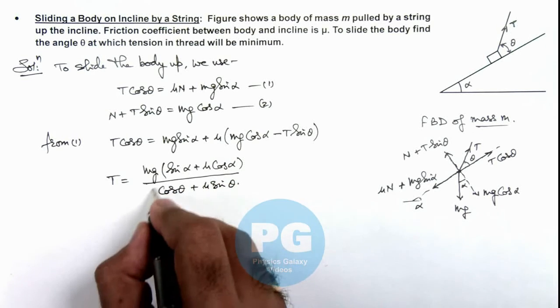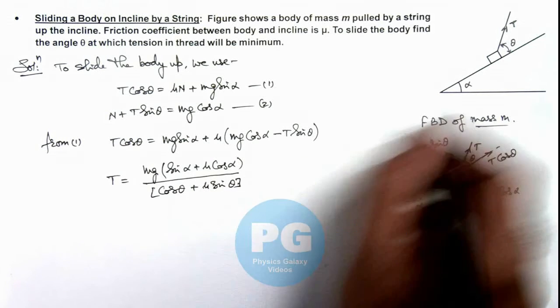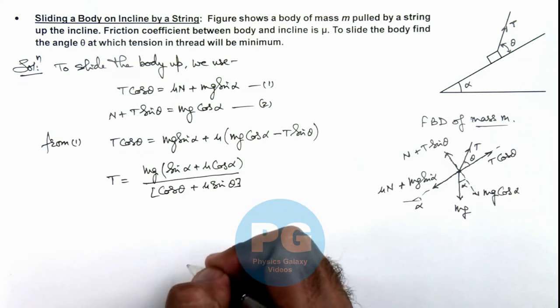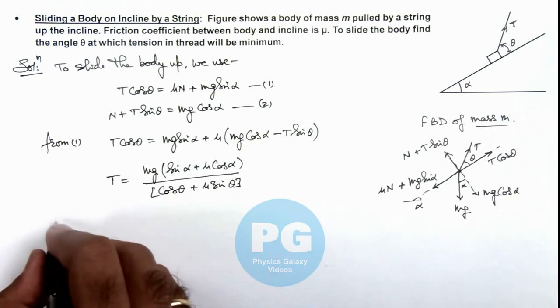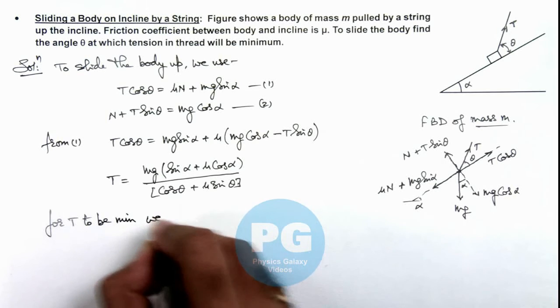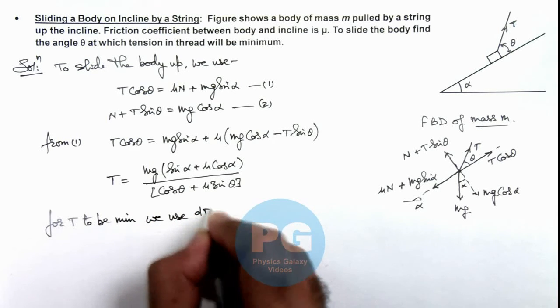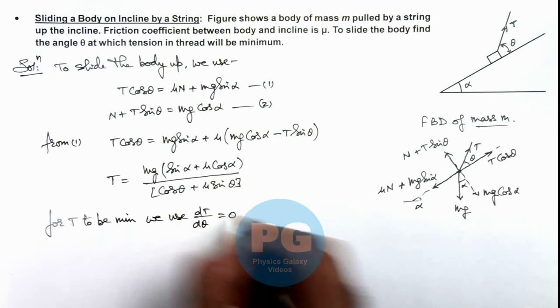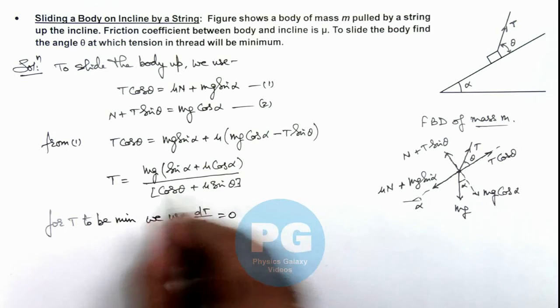So here θ is varying and the value of α which is that of incline is constant. So for T to be minimum, we use dT over dθ is equal to zero. As numerator is a constant we can differentiate this term.